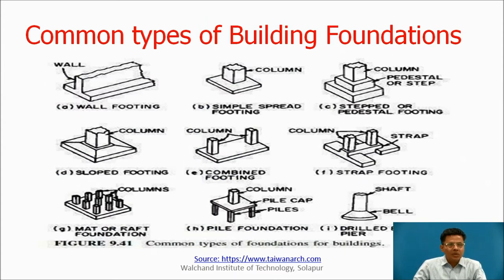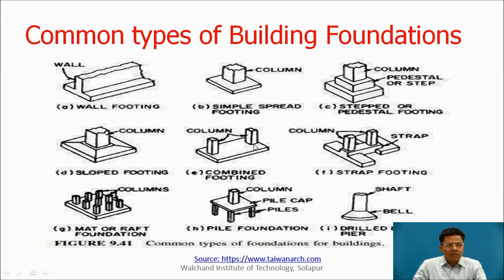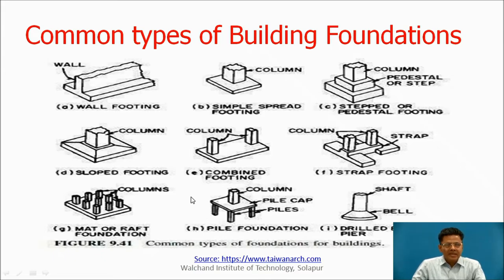Here we have different common types of building foundation. First is a simple wall footing — this is the wall and this is the footing. This is a simple spread column footing with the column above. Here is a stepped footing provided to a column with a pedestal. Here is a column provided with a sloped footing. Here two columns are provided with a combined footing. Here is a strap footing with two columns connected by a strap. Here is a mat or raft foundation where columns transfer load to the raft. Here is a pile foundation where load transfers from column to pile caps and then to the piles. Here is a drilled pier.